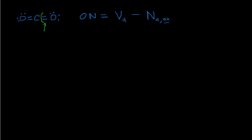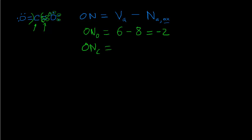Counting all electrons now assigned to that oxygen, we get eight. So the oxidation number for oxygen is its normal valence — six — minus eight, giving negative two. For carbon, all shared electrons are assigned away to oxygen, leaving carbon with zero electrons. So carbon's oxidation number is its normal valence — four — minus zero, which is plus four. In CO₂, carbon is in the +4 oxidation state and oxygen is in the −2 oxidation state.